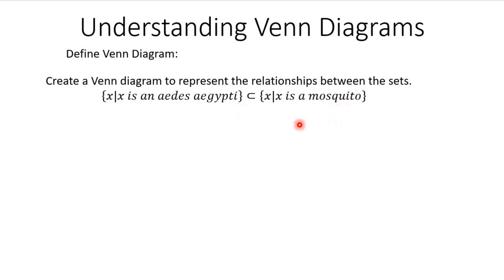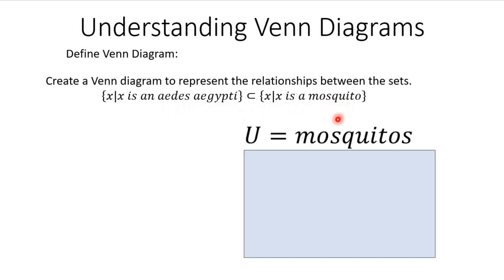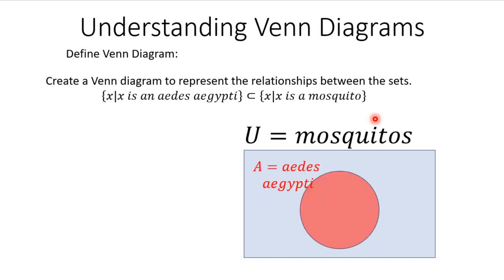First, we start off with the universal set — the one that is the superset of the other, the one that contains the other. That's the set of mosquitoes. Aedes aegypti is a subset of mosquitoes, so mosquitoes are the universal set. Within that universal set of mosquitoes, we place a circle completely contained within it for the Aedes aegypti mosquito. This Venn diagram visually represents that all Aedes aegypti mosquitoes are also mosquitoes.